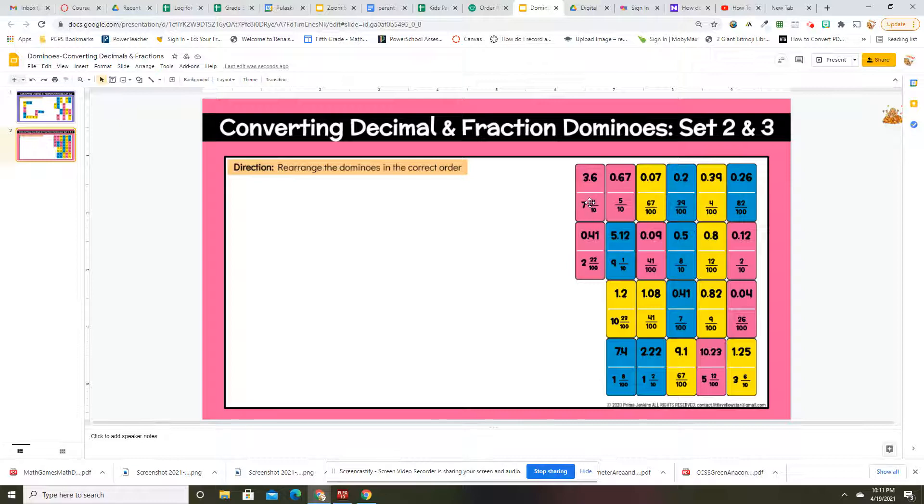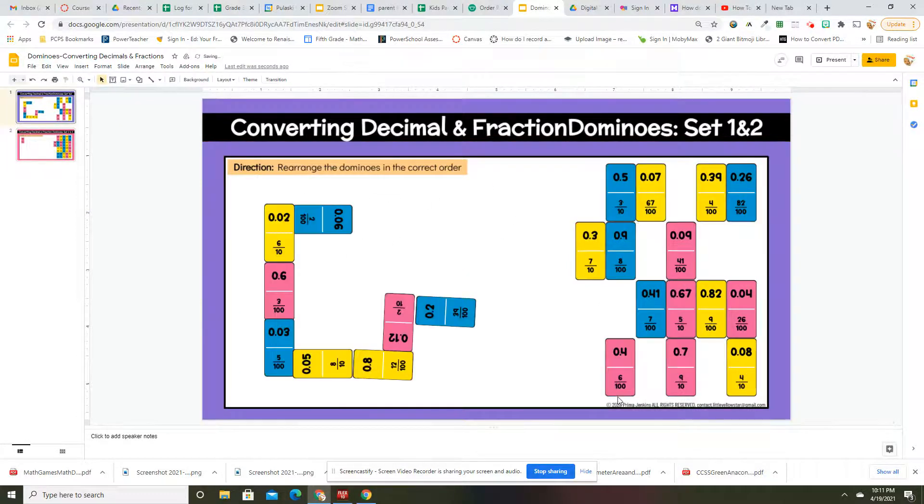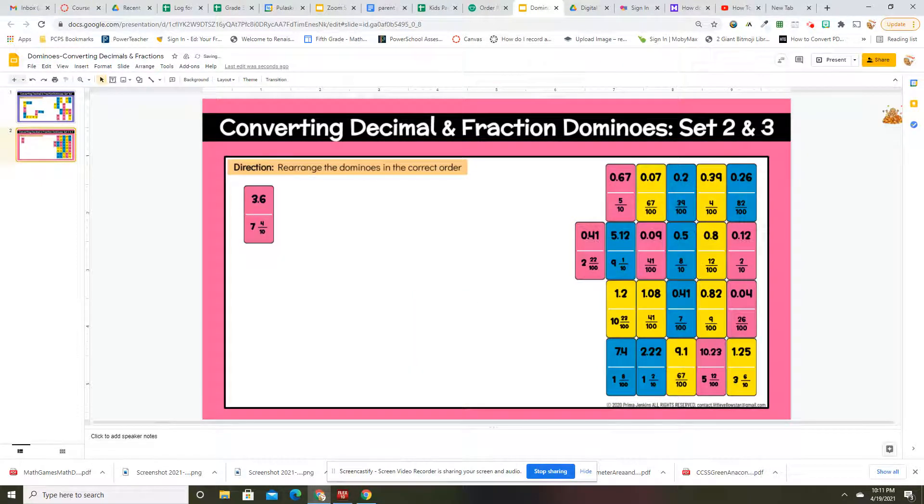So if you have, well, let's start with seven and four tenths. You're going to need to find the next number of seven and four tenths. Well, the decimal I mean. So you have this one, and this is the same thing. All right, have fun.